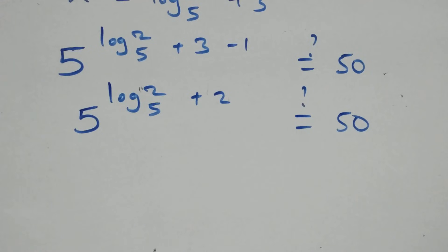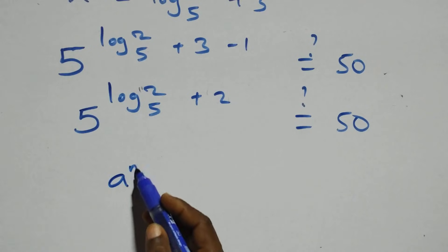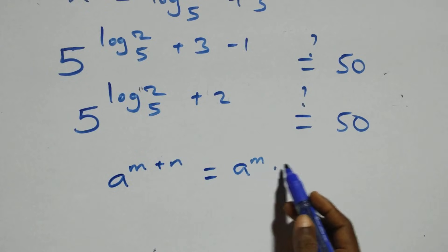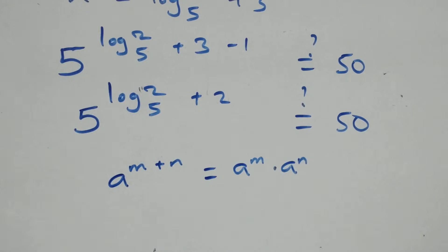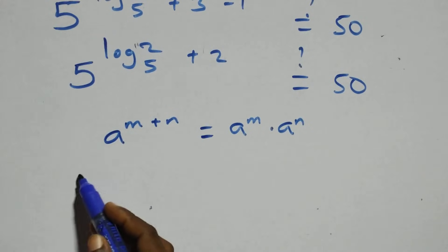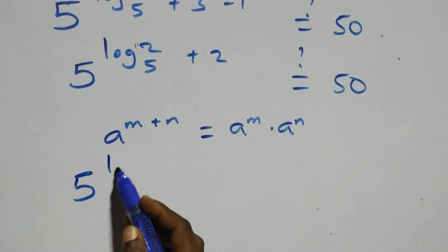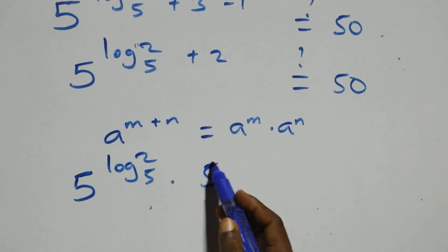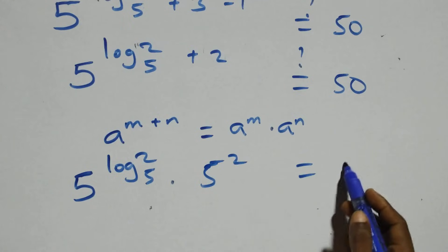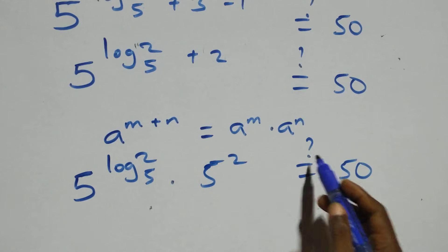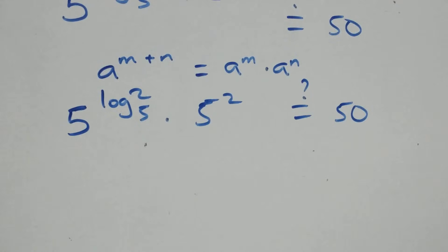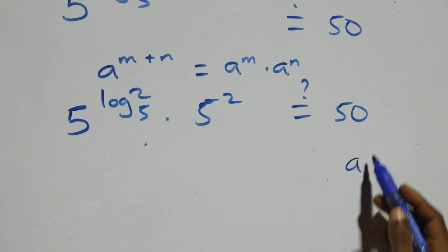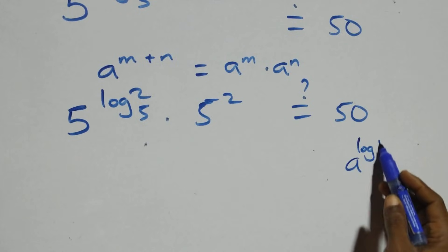Using the exponent rule a raised to power (m plus n) equals a^m times a^n, this becomes 5 raised to power log₅2, times 5 raised to power 2. We apply the logarithm law: a raised to power log_a(b) equals b.